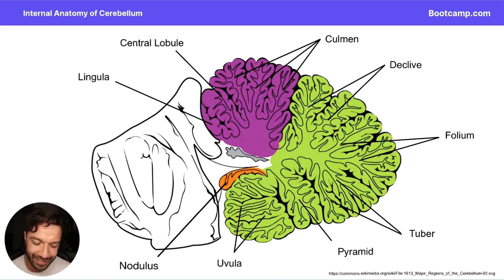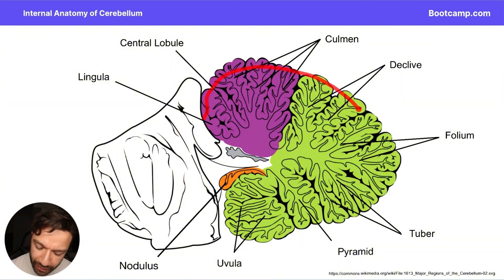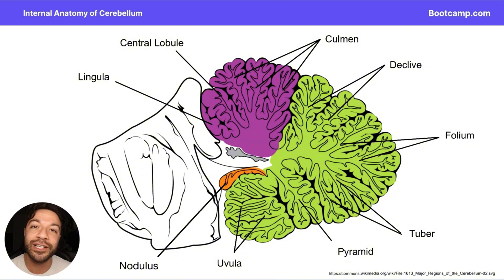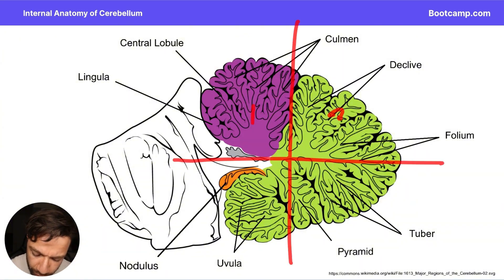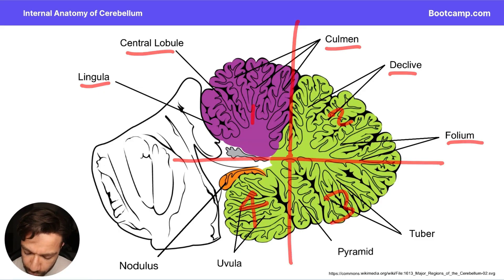Now let's look at the internal anatomy. In this mid-sagittal section cut directly down the middle of the vermis, the inside looks like a tree with branches — these are lobules. To identify them, divide the cerebellum into four quadrants. In quadrant one: the lingula, central lobule, and culmen. In quadrant two: the declive and folium. In quadrant three: the tuber lobule and pyramid lobule. In quadrant four: the uvula and nodulus.